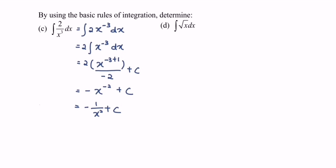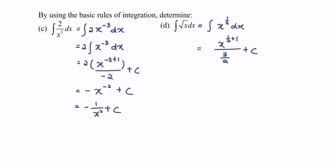For part D, modify the situation: integrate x to the power of one half with respect to x. This gives x to the power of one half plus one, over three over two, plus c. Simplifying, we have x to the power of three over two, multiplied by two over three, plus c. And that's all — thanks for watching.